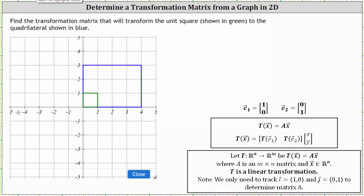We're asked to find the transformation matrix that will transform the unit square shown in green to the quadrilateral shown in blue. This is an example of a linear transformation in R2, and therefore we can find the two by two transformation matrix by determining the transformation of the vector E sub one and the transformation of the vector E sub two. The transformation of E sub one will be the first column of the transformation matrix, and the transformation of E sub two will be the second column.